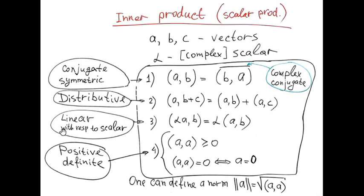It is linear with respect to multiplication by a scalar. Alpha A inner product with B is alpha multiplied by inner product of A with B. And it's also positive definite. I mean inner product of A with itself is greater or equal to zero and it is zero if and only if A is the zero vector.